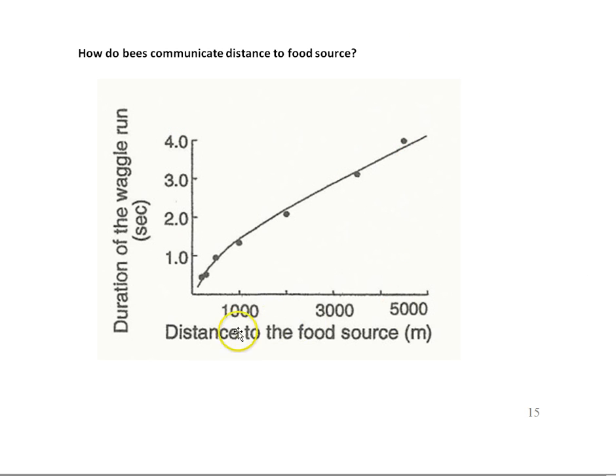For example, we see down in this graph, distance to the food source. So as you move the food different distances from the hive, you see the duration of the waggle run. The duration of the waggle run, that part when it's waggling, is increasing. As the food is moved farther from the hive, the duration of the run is increasing.